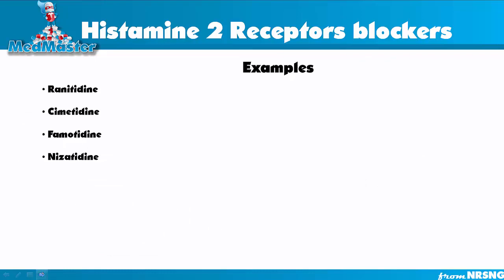Examples of medications in this class include ranitidine, cimetidine, famotidine, and nizatidine. It's easy to recognize these drugs because they all end with '-tidine.' So any drug ending in '-tidine' is a histamine 2 receptor blocker.